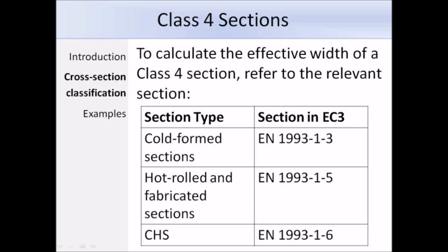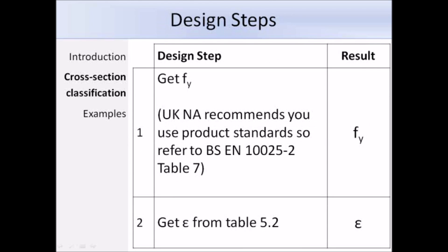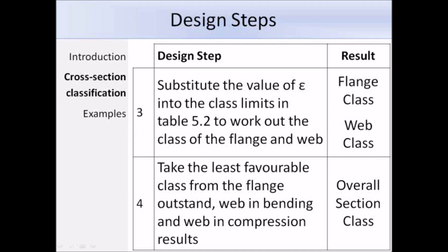Here is a summary of the design steps. Step 1: determine the yield strength f_y — in the UK, refer to the product standards rather than table 3.1. Step 2: determine epsilon using the equation or by reading from the bottom of table 5.2. Step 3: go to table 5.2, get the class limits for the flange and web, substitute epsilon, and compare the width-to-thickness ratio to determine the class of each part. Step 4: classify the overall section as the least favourable class from the flange or web.